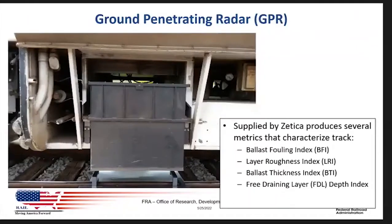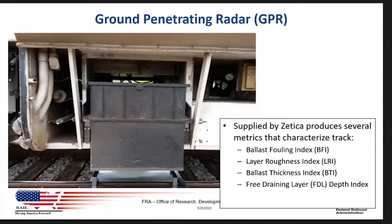The ground penetrating radar on the FRA car was provided by Zedica. The GPR produces several metrics that characterize the track. The latest development is that we are able to process the data in real time, and the processing is actually triggered by the geometry system. The GPR collects data continuously, but the raw data is processed in real time around specific geometry deviations.